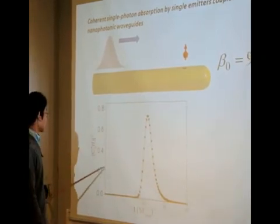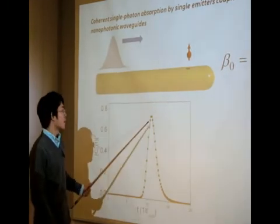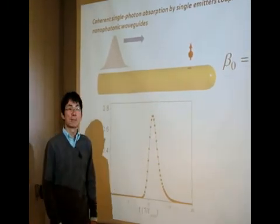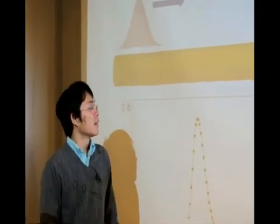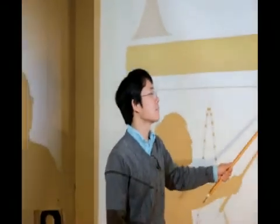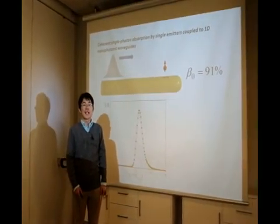It shows the atomic excitation as a function of time. The maximum value here is 72%. So in the end, I hope you are convinced that by engineering the photonic environment, you can gain significant improvement on the atomic excitation. Namely, you need to make the spontaneous emission beta factor as large as possible. Thank you.